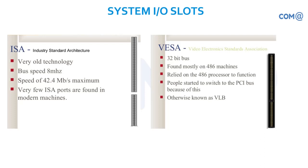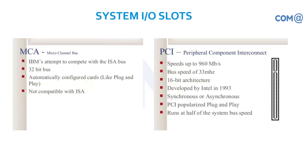The ISA slot is very old technology with a very low bus speed of 8 MHz and is not available in the latest motherboards. Then came VESA — Video Electronics Standards Association — designed for inserting video graphic cards for high-performance video. Next came the MCA slot, designed by IBM to compete with ISA, built with a 32-bit bus, but not compatible with ISA cards.